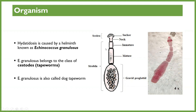The structure of the tapeworm includes a scolex — where the head is — and then the neck. Then you have three major areas: where you have the immature segments, then where they mature, and then the gravid proglottid — this is the section which normally peels off, and then we have the release of the eggs.